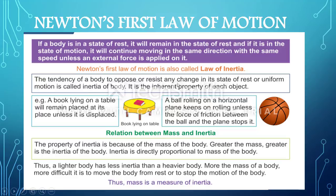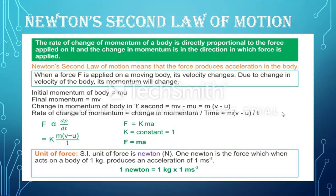Newton's First Law is also known as the Law of Inertia. The tendency of a body to oppose or resist any change in its state of rest or uniform motion is called inertia. It is the inherent property of each object. The property of inertia is because of the mass of the body — the greater the mass, the greater the inertia. For example, a book on a table remains there unless displaced, and a ball rolled on a frictionless surface will continue rolling unless a force is applied.